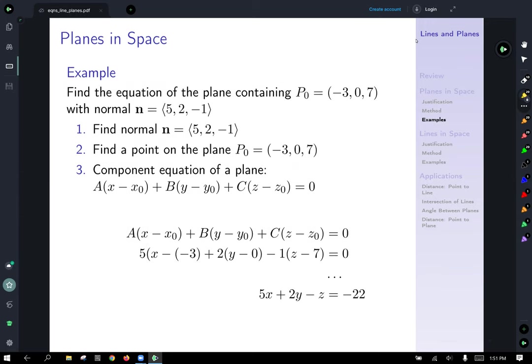So here's an example. Find the equation of a plane containing the point p0 is equal to negative 3, 0, 7, with normal 5, 2, negative 1. Well, we're given the normal, so we don't need to do a bunch of work here. And remember, the normal is notationally a comma b comma c. So filling in the blanks here, we're just going to go ahead and plug 5 in for a, 2 in for b, negative 1 in for c, and then go ahead and fill in your values of your point there. And you've got yourself your equation, once you algebra that into shape.